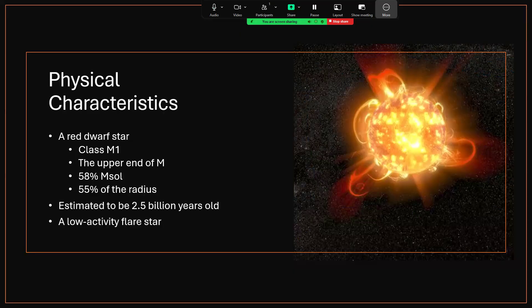Physically it's a red dwarf class M1. The M class stars are known as red dwarfs and that runs from the brightest at M0 through to M9. So class M1 is at the upper brightness end.